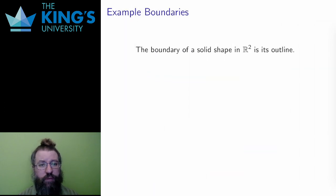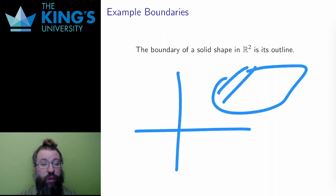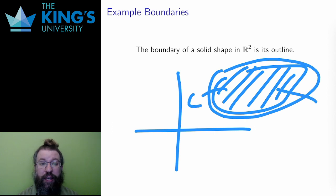But what about open surfaces? In R2, any finite solid shape has a boundary, which is the outline of that shape. It's where the shapes stop. It's its edge.